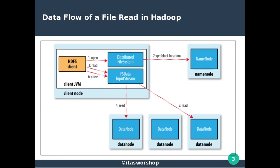In this video I'd like to focus on how a typical file read happens in a Hadoop cluster. When we talk about a Hadoop cluster, we know we have two components: one is the NameNode and the other is the DataNode. The NameNode has information about all the blocks — which block is residing on which DataNode — and DataNodes are the nodes where the actual data blocks reside.